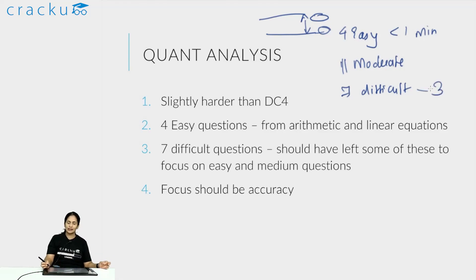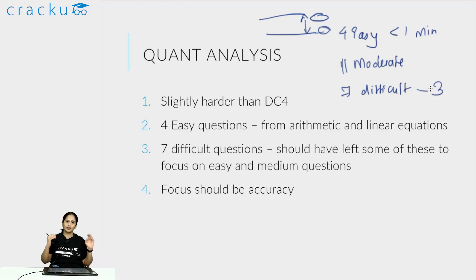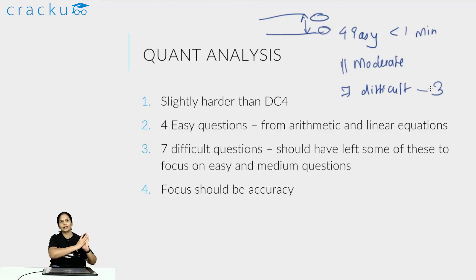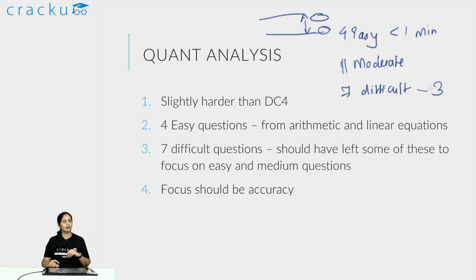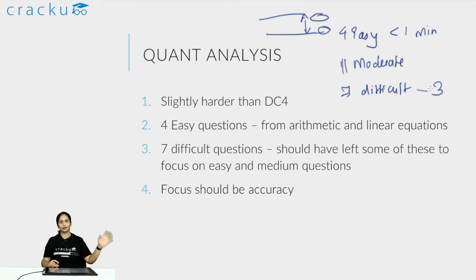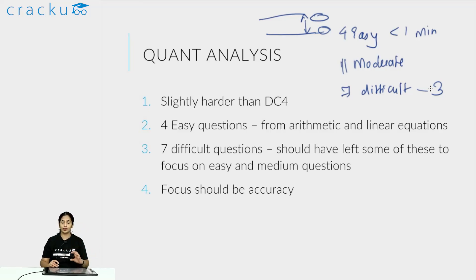Of the seven difficult questions, I think you should have done at most three and left four. A good attempt would have been 18 questions, and of those 18 you should have gotten most right — around 16 to 18 correct — which would have been a very good attempt. I'm saying this in terms of what it would take to clear 95 percentile or 98 percentile in quant. I think 18 questions attempted would have easily cleared 95 percentile, probably even 98 percentile. Those doing really really well can attempt 22 and get 22 right. But if you're looking just to clear the section with a good score and get 98 percentile in quant, 16 to 18 attempts would have been good.